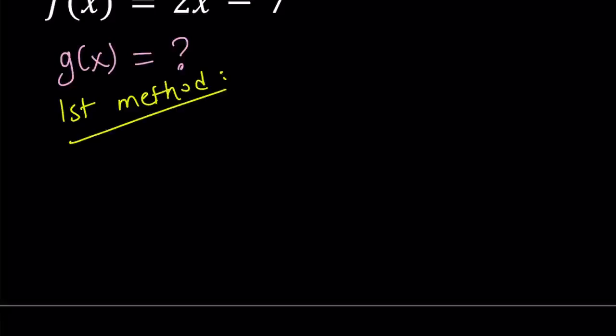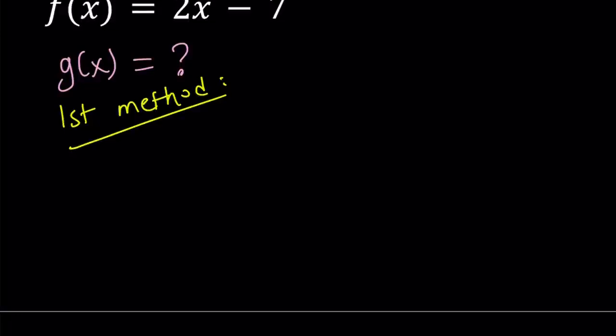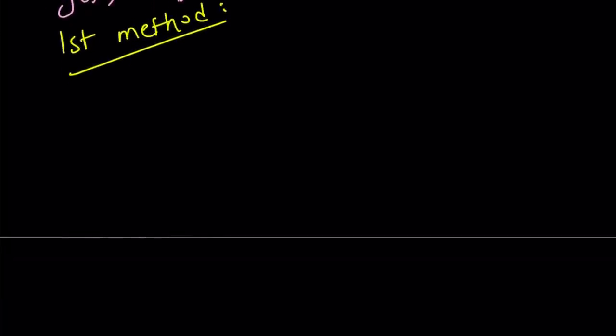My first method basically involves writing f(g(x)) to make it look like f(x). So what do I mean by that? Let me clarify. So f(g(x)), the composition of f and g, is given as 4x squared minus 2x plus 1. So I'm going to manipulate this expression. First of all, I can take out a 2 here.